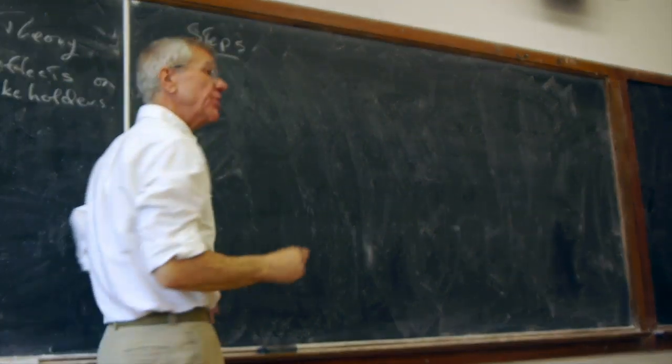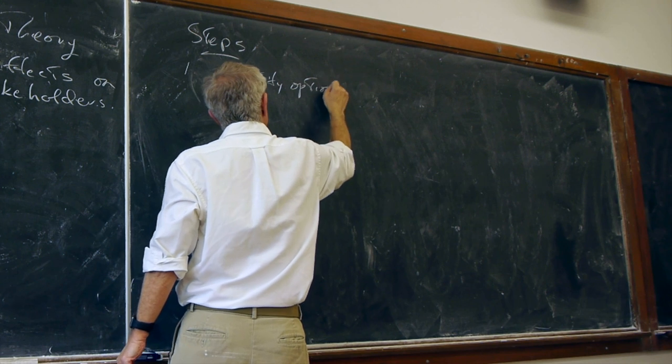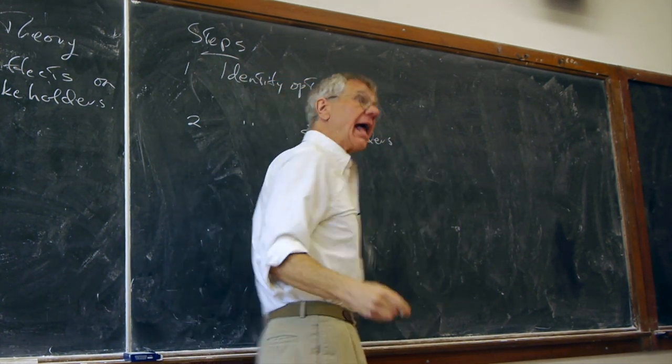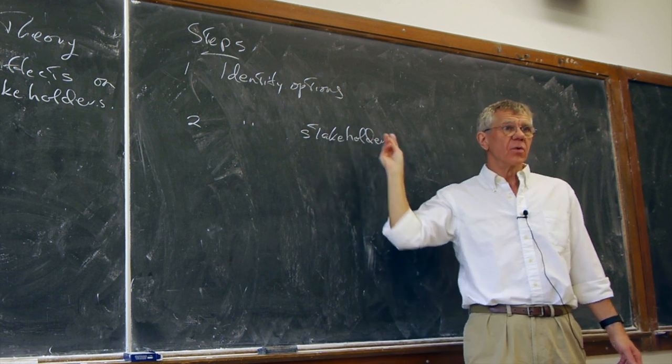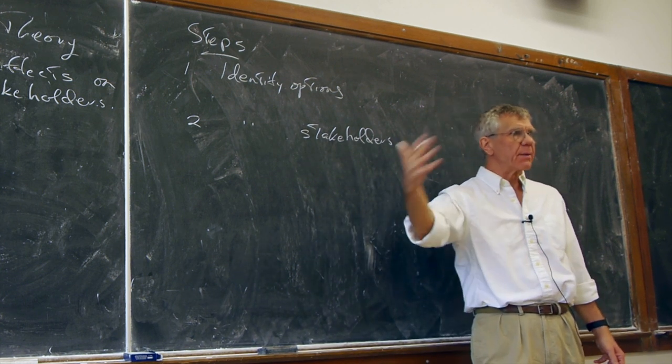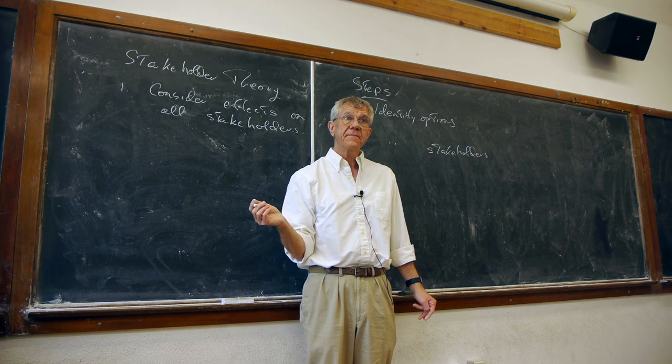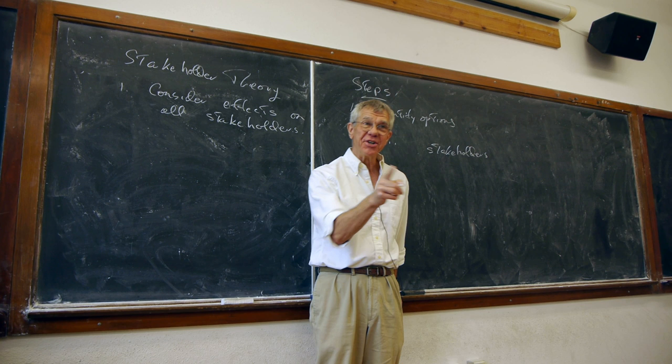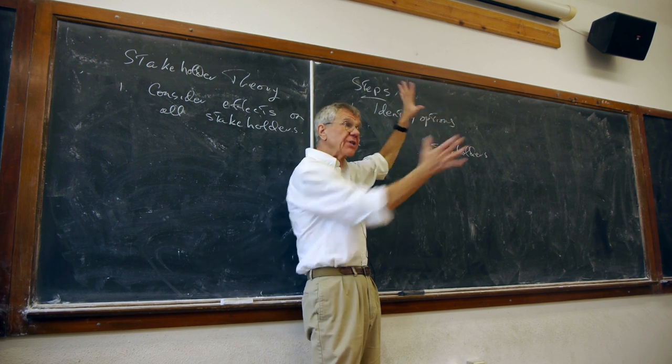As we're thinking through what we do, what are the steps to a consequentialist analysis of any kind? Well, the first one is to identify options. And the second one is going to be to identify the stakeholders. And it's harder than you think. There are lots of secondary effects. So it's often very easy to say the people who run the company or the people they help, the customers of the company, etc. But when you go one step beyond that, you realize there are lots of these other secondary effects.